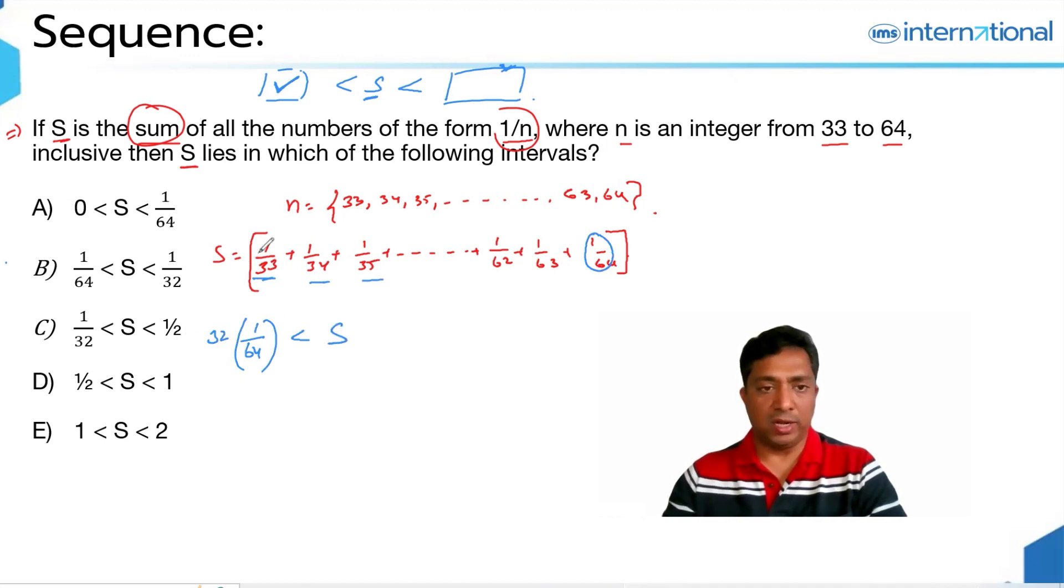1/33, 1/34, 1/35, you see 1/33 carries the lesser denominator than all of these numbers, should give you the greater result, which means 1/33 is greater than each of these 32 elements, so times 32 should be greater than S.